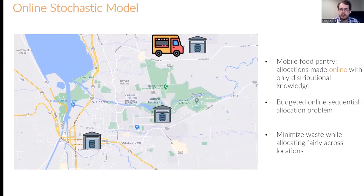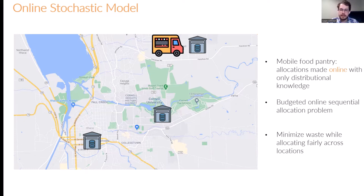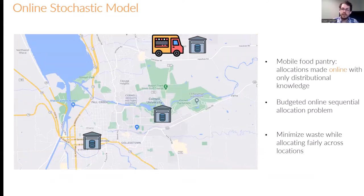We were primarily motivated by their mobile food pantry program. At a high level, the way the program works is by loading up a truck at the start of the day, visiting various drop-off locations across different communities, and distributing per person allocations at each location. The allocations are made online, round by round, and the algorithm is only able to use distributional knowledge of the demands for future locations because that information is only revealed sequentially. You can think of this as a budgeted online sequential allocation problem.